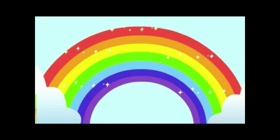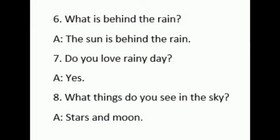How many colors are there in the rainbow? There are seven colors. Children, name the seven colors: red, orange, yellow, green, blue, indigo, and violet. Very good! What is behind the rain? The sun is behind the rain. Do you love rainy day? Yes!